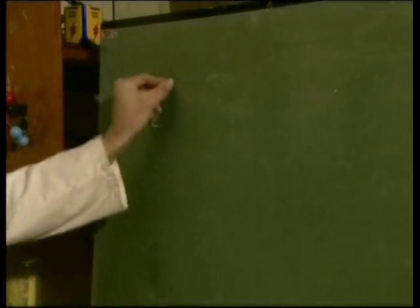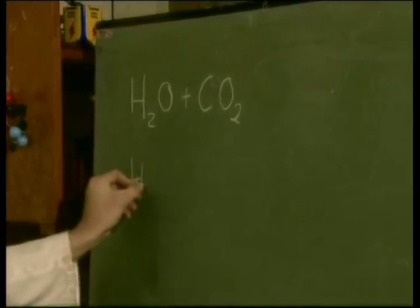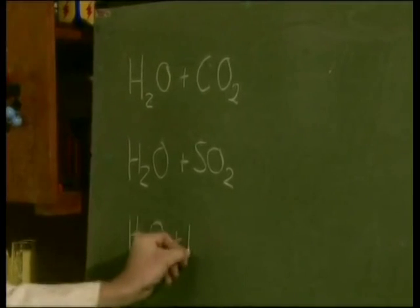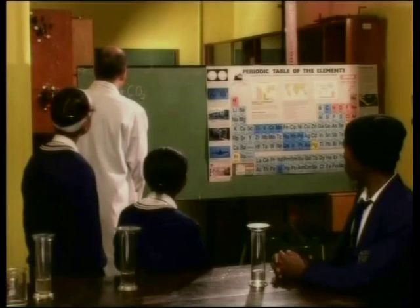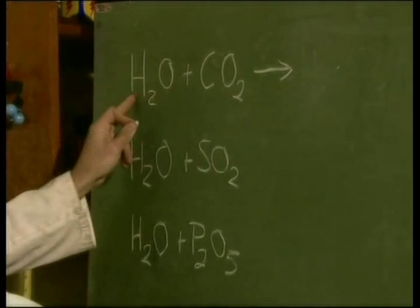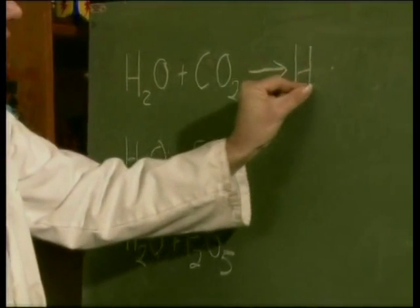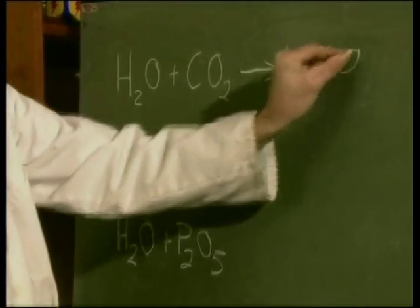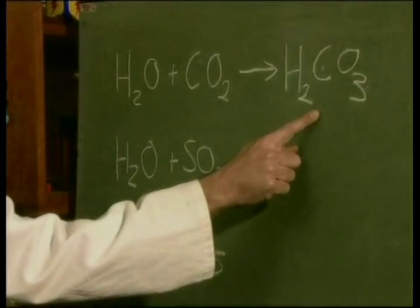Now it's time to look at the equations of these reactions. When water combines with carbon dioxide, it gives us carbonic acid. Let's work out the formula: we have two hydrogens on one side, one carbon, and three oxygens — giving us H2CO3. This is the formula for carbonic acid. Can you predict what the formula will be for sulfurous acid? It is H2SO3. That's absolutely right.